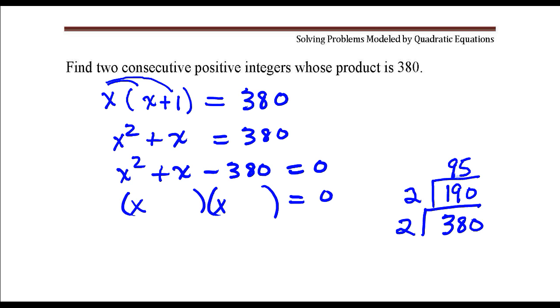95 is not divisible by 2, it's not divisible by 3, but it is divisible by 5, which gives me 19. We can go ahead and stop there because the quotient is a prime number.